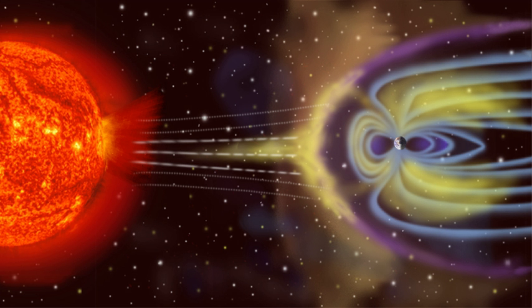Farther out, field lines can be significantly distorted by the flow of electrically conducting plasma, as emitted from the Sun or a nearby star.